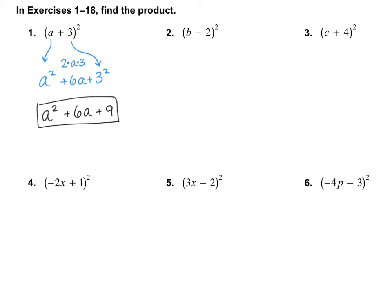Let's look at number 4. I take my first term and square it: negative 2x squared gives 4x squared (positive). My last term squared is 1 squared, which is positive. Then my middle term is 2 multiplied by the first term multiplied by the last term, giving negative 4x. Simplified, the final answer is 4x squared minus 4x plus 1.